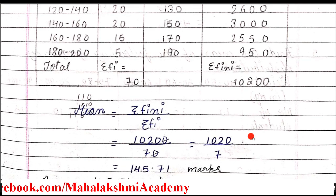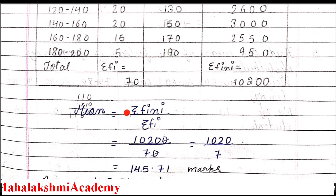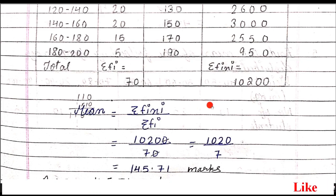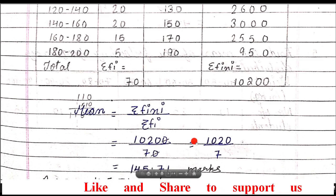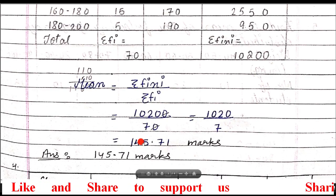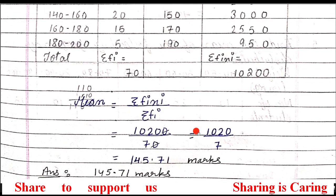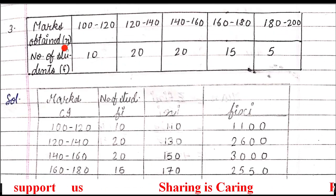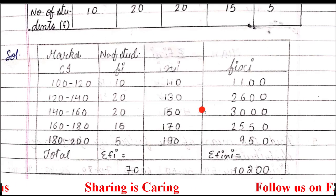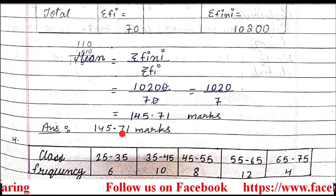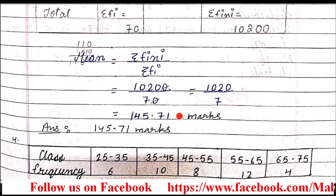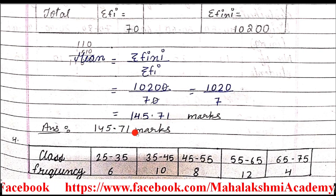Since we have to find out the mean, the mean formula is sigma fi·xi upon sigma fi. Putting the value of sigma fi·xi, that is 10200, and sigma fi is 70. Canceling zero and dividing, you will get the answer 145.71. Since in this question the data are marks, it is necessary to write the unit, so the mean marks of the complete question is 145.71 marks.